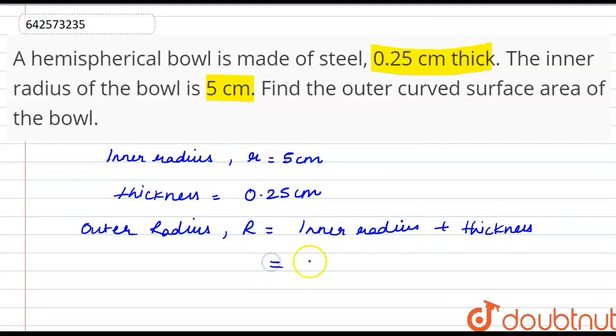So we have the inner radius as 5 cm plus thickness as 0.25 cm. So we have the outer radius, that is capital R, as 5.25 cm.